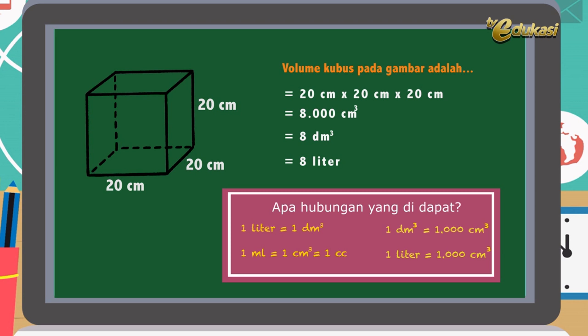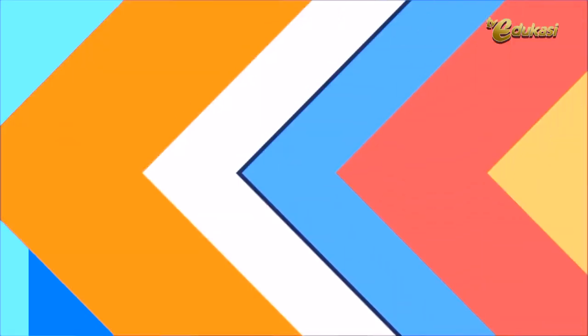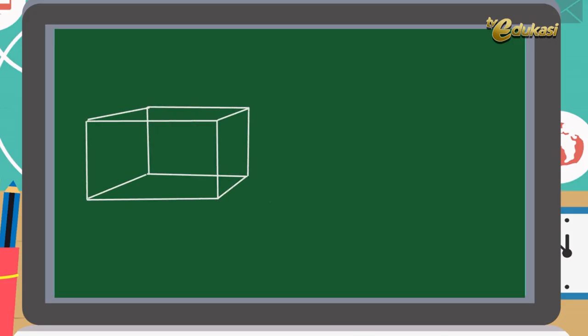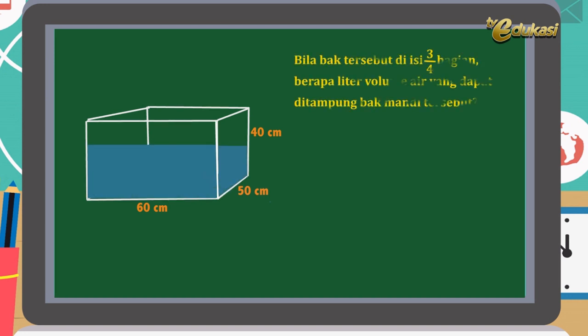Mudah ya? Tolong diingat ya satuan itu. Baik. Ingat, belajar matematika bersama Pak Ridwan membuat matematika menjadi lebih mudah. Baik anak-anak, kita akan membahas soal tentang satuan volume dalam bentuk HOTS — Higher Order Thinking Skill, atau berpikir tingkat tinggi. Sebuah bak mandi berukuran 60 cm × 50 cm × 40 cm. Bila bak tersebut diisi ¾ bagian, berapa liter volume air yang dapat ditampung bak mandi tersebut?